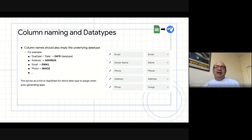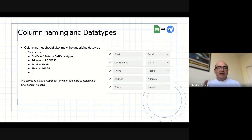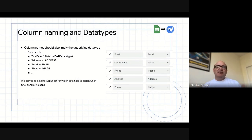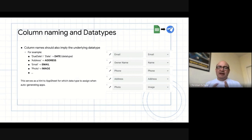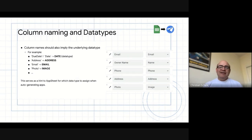A few points on column naming and data types. AppSheet is intelligent in the sense that it has pre-designated data types for email, image, address, photo, and such. When it takes the actual sheet data, it's able to correctly decide the best fit data type. If it sees photos, it will say that's an image. If it sees email, it assigns that as an email. This dictates the behavior of the generated app, so you don't have to hand-code these things.